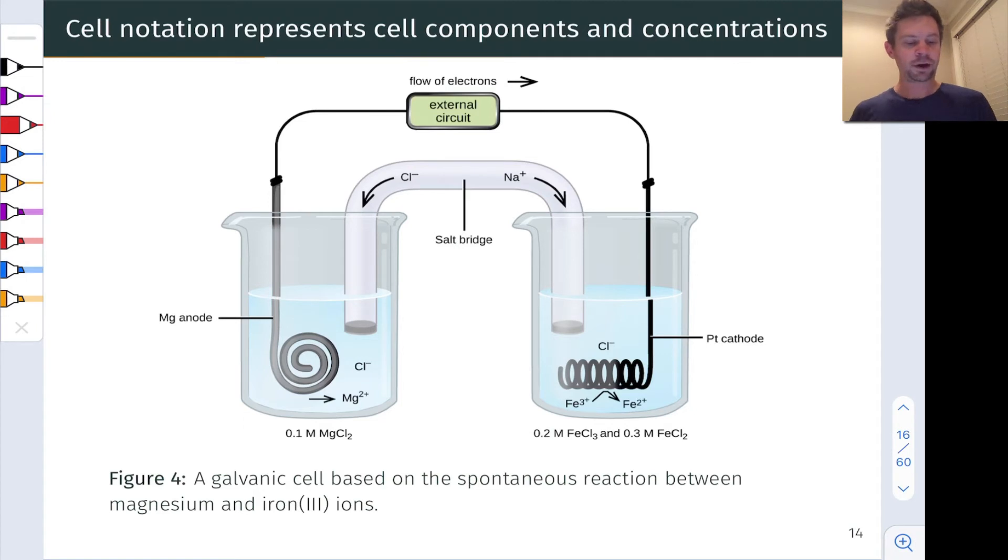Here's another example of a galvanic cell involving a magnesium anode and a platinum cathode where iron three is being reduced to iron two. The platinum cathode is actually not a reactive component. It's just there essentially to ferry electrons into the cathode. We've got NaCl in the salt bridge. The components of the salt bridge are not relevant since those ions are unreactive, so we don't need to include those.